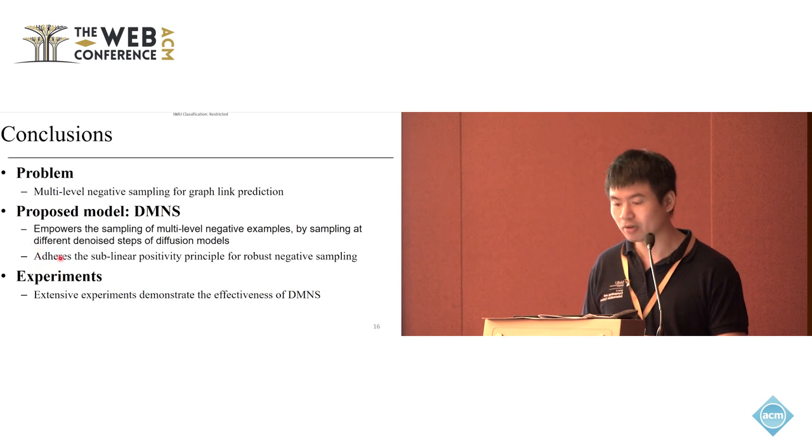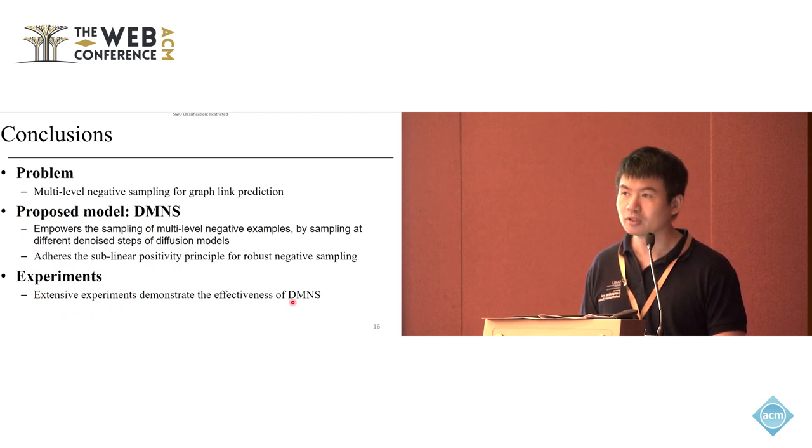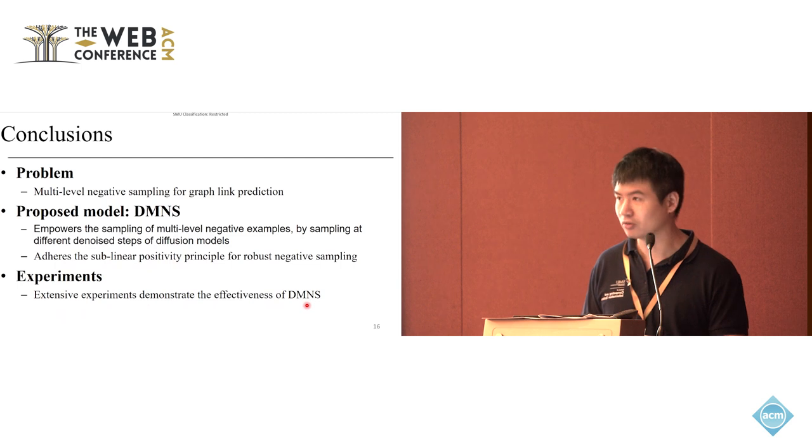In the paper, we actually also explore some theoretical aspects. If you're interested, you can look for our paper. We actually showed that the negative samples we have generated from our diffusion model follow the sublinear positivity principle, which is an ideal property for negative samples on graphs. Finally, we did extensive experiments to demonstrate the effectiveness of our diffusion-based multi-level negative sampling. Thank you.